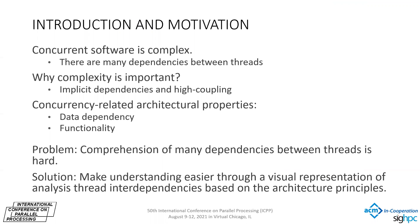We live in the era of concurrent software and compared to sequential software, concurrent software is more complex because concurrent software parts — where we mainly focus on threads and multi-thread software — influence each other. In order to develop, manage, change, and test such software, it is important to understand coupling between different software parts, or in our case, concurrent threads. The main cause for this inter-thread influence and dependencies between threads are data dependencies or shared functionality between the threads.